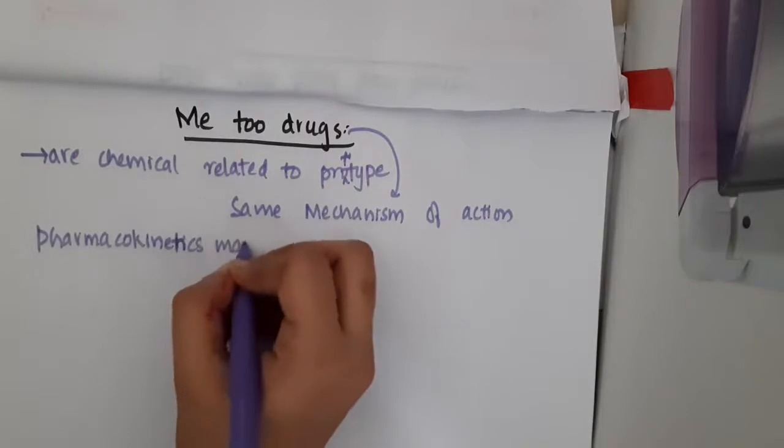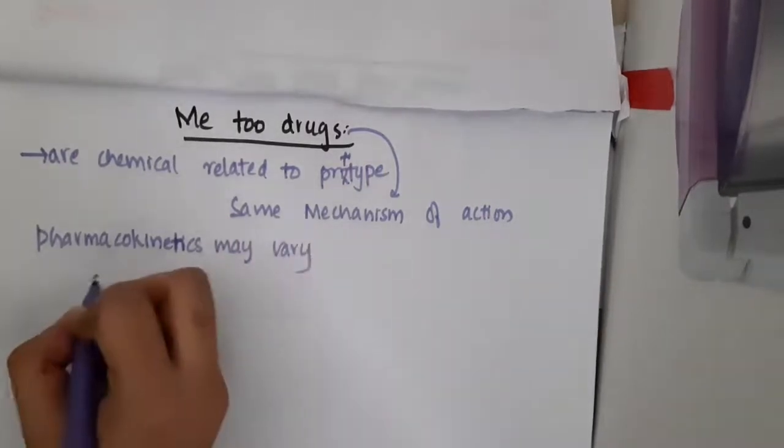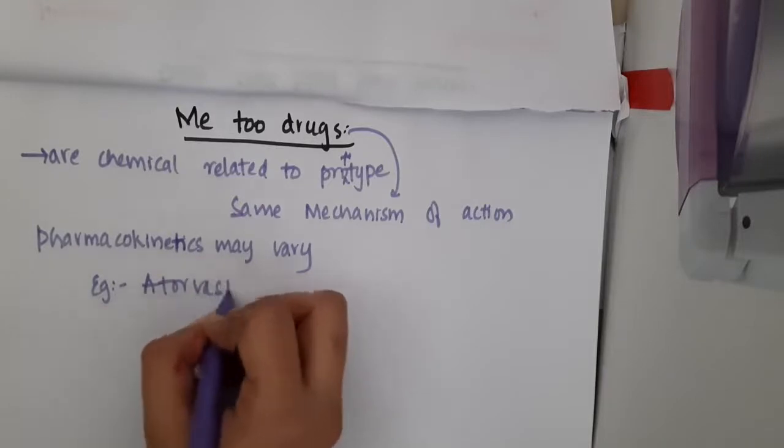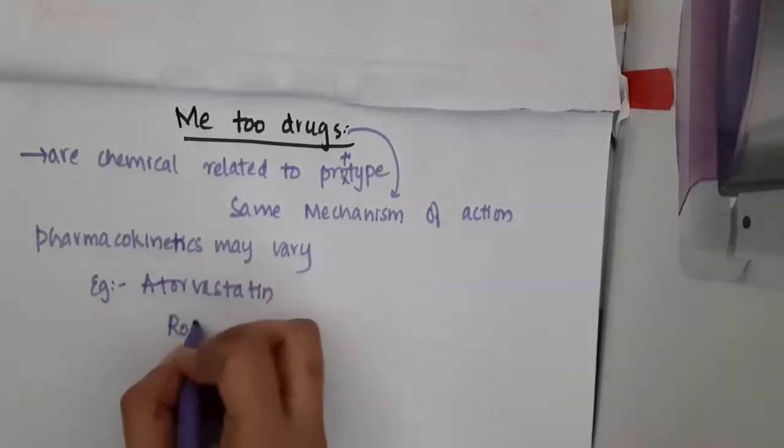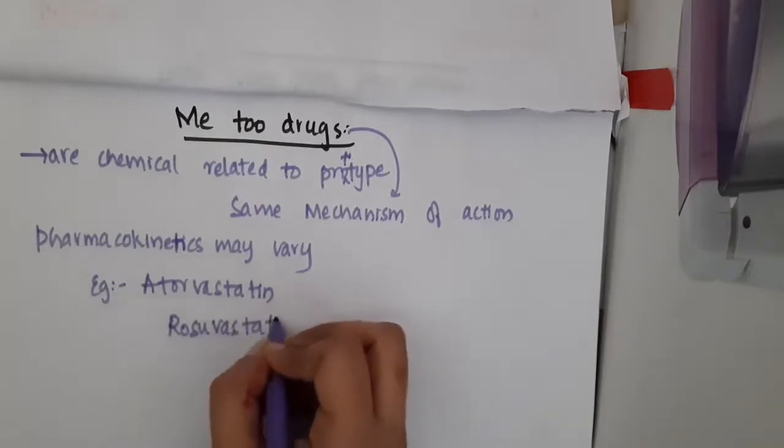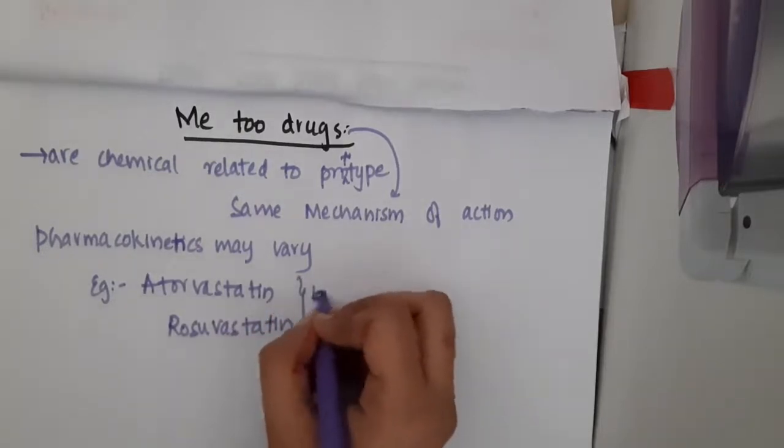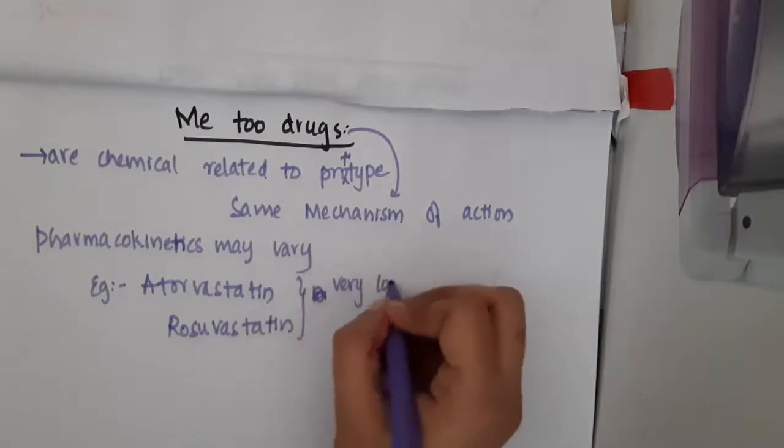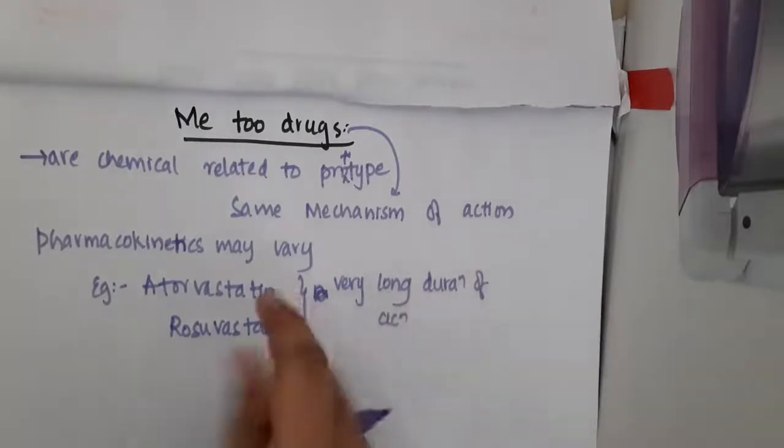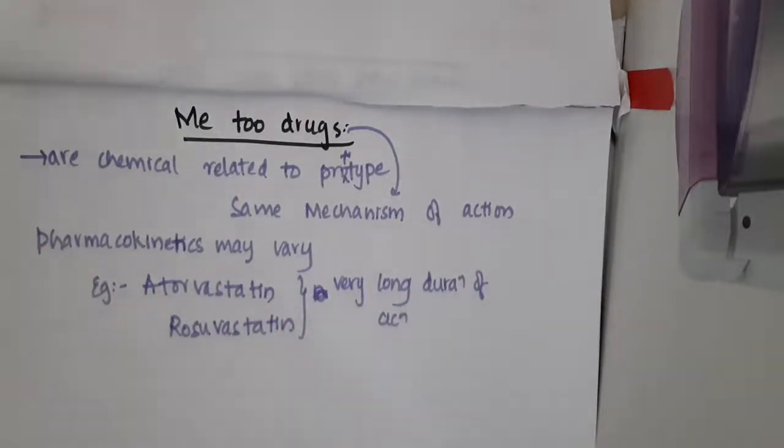Pharmacokinetics may vary. For example, if you see atorvastatin and rosuvastatin among the statins, atorvastatin and rosuvastatin have very long duration of action when compared to other statins. But the mechanism of action of atorvastatin and rosuvastatin is also to inhibit the statins, so obviously their mechanism of action is same.